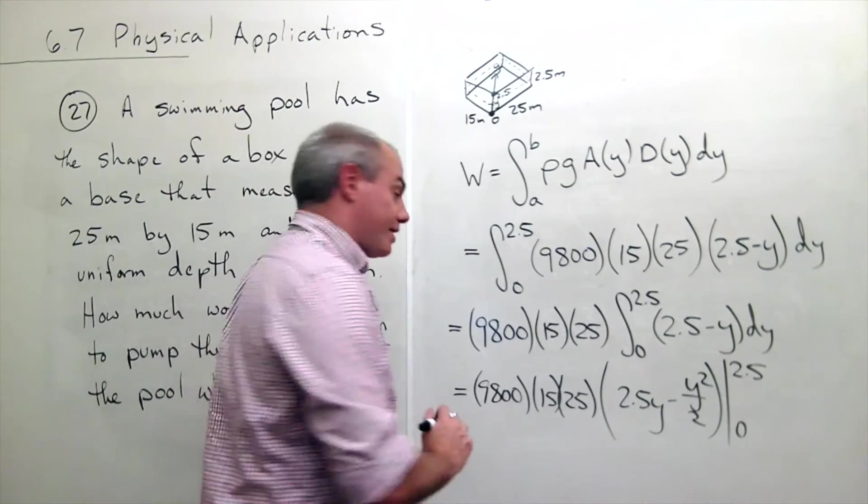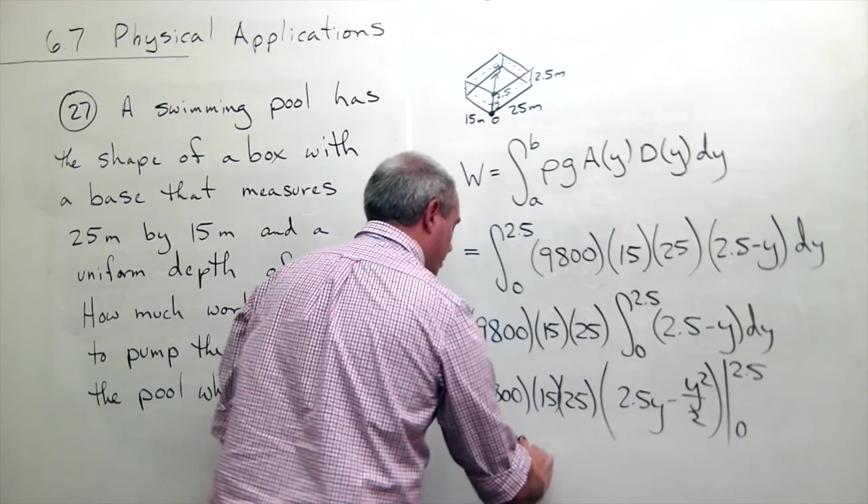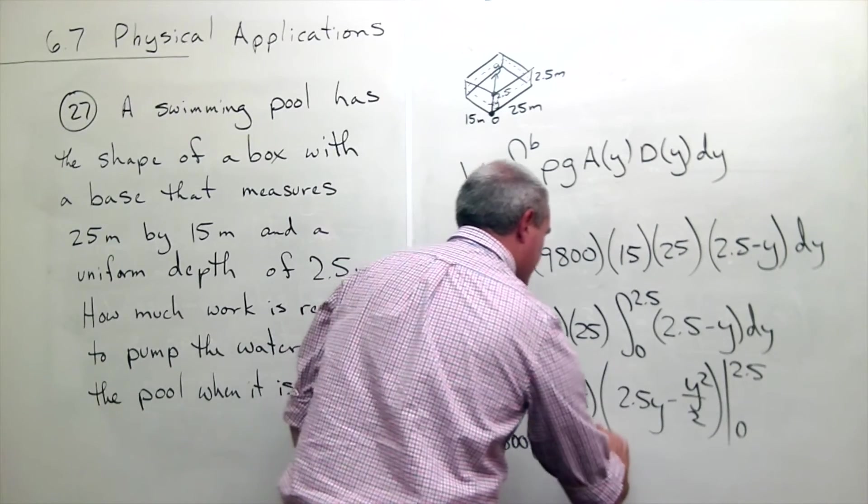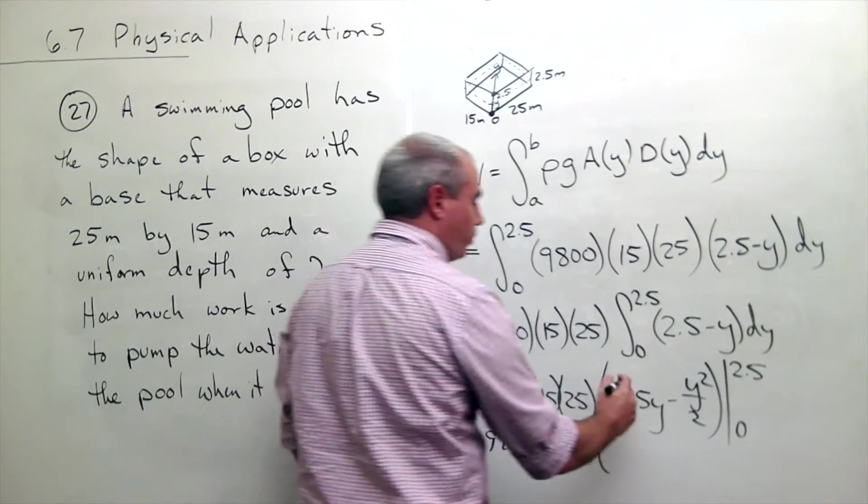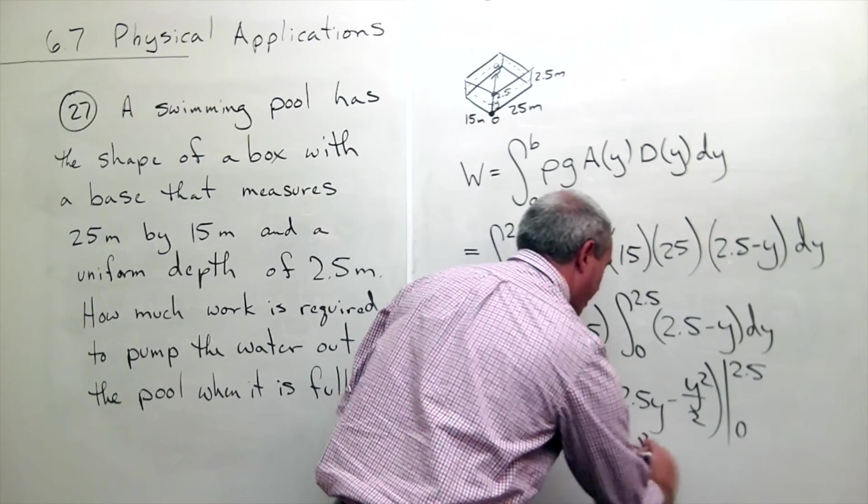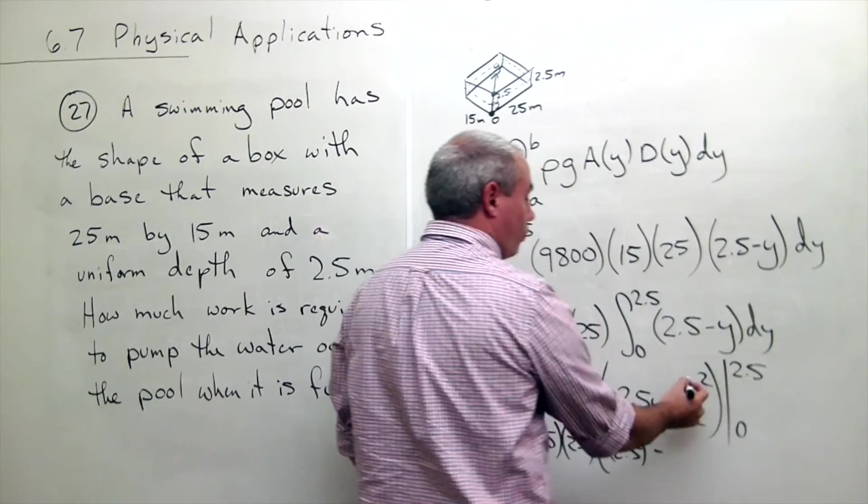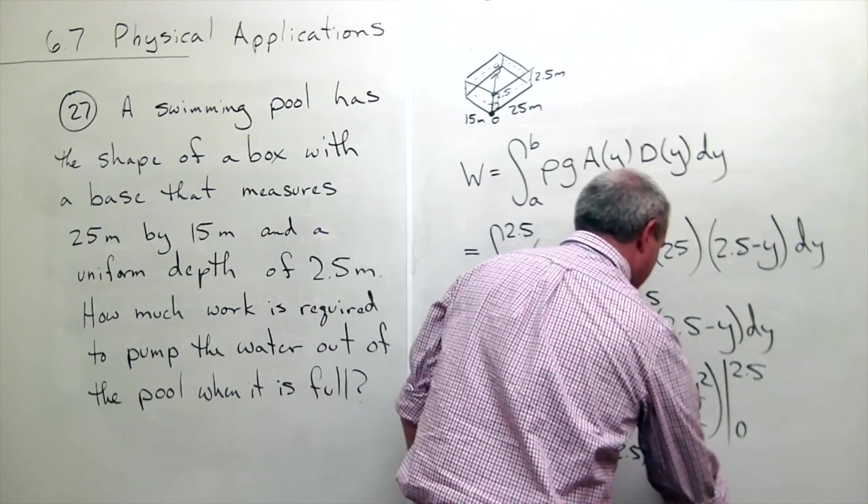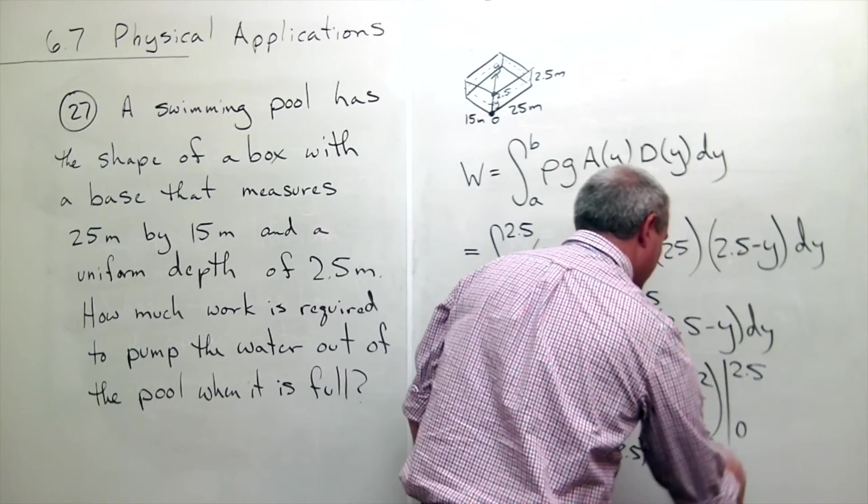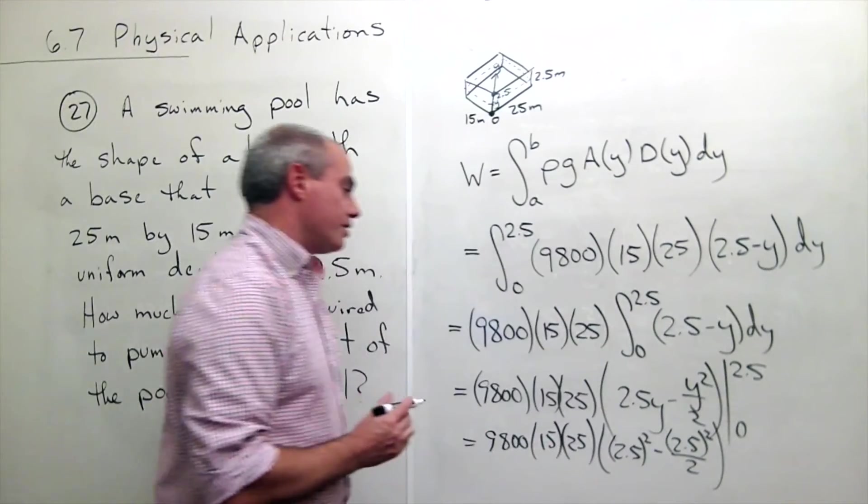I plug things in and I get 9,800 times 15 times 25 times, I plug in 2.5 and I get 2.5 quantity squared minus 2.5 quantity squared over 2. And then if I plug in 0 for both of these things, I just get 0. So that's it.